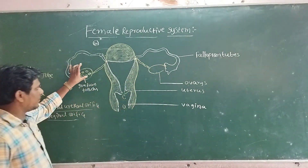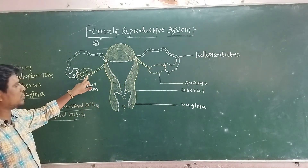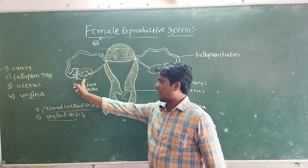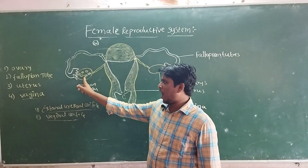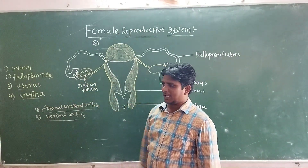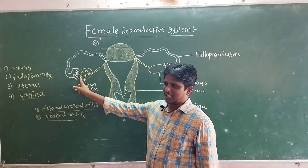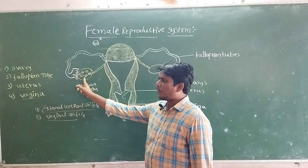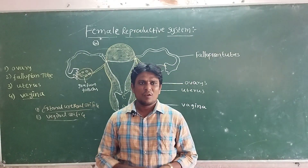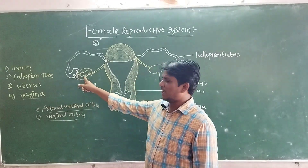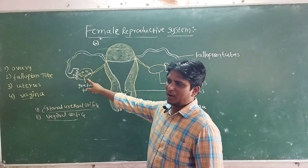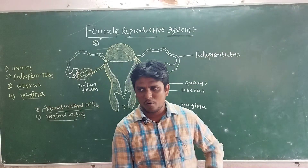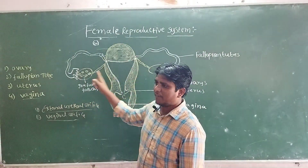Each ovary contains a cellular space structure called follicles. This follicle is known as the Graafian follicle. The Graafian follicle releases the ovum — this is known as ovulation. Every month, the left ovary and right ovary alternate in releasing one ovum. This is the function of the ovary.